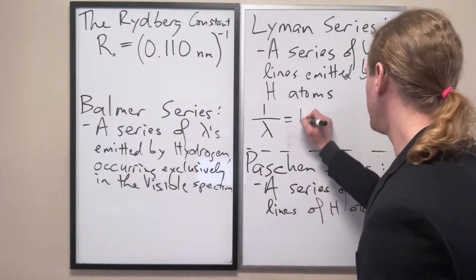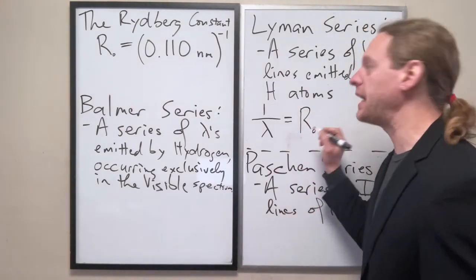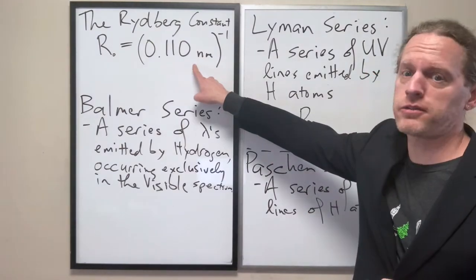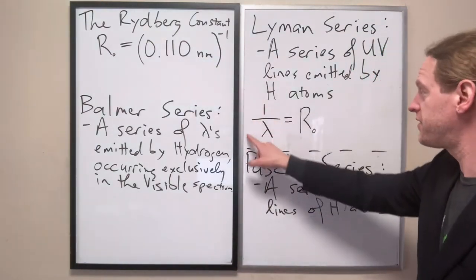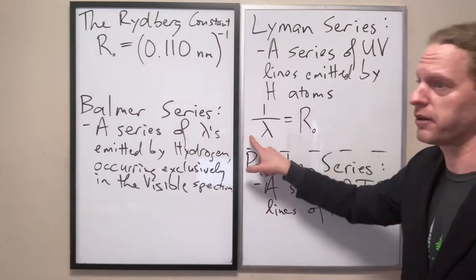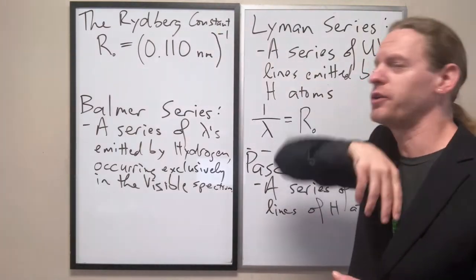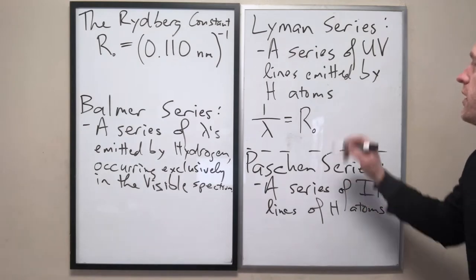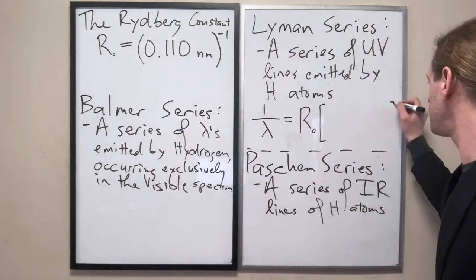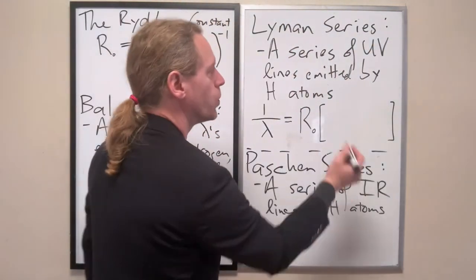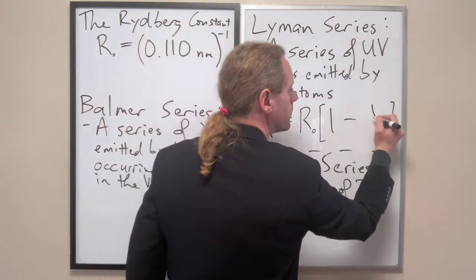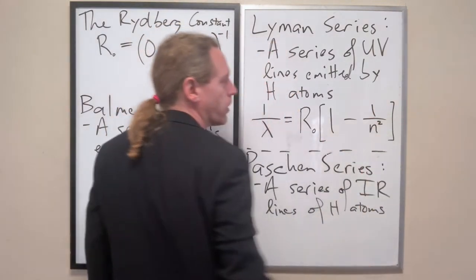The inverse of each wavelength in the Lyman series is given by R naught - and that's good because it has units of inverse nanometers, and this side also must have units of inverse nanometers. That's why the units are as funky as they are.